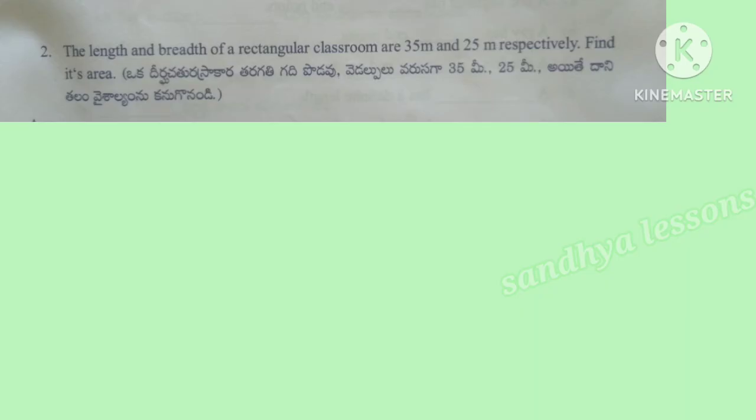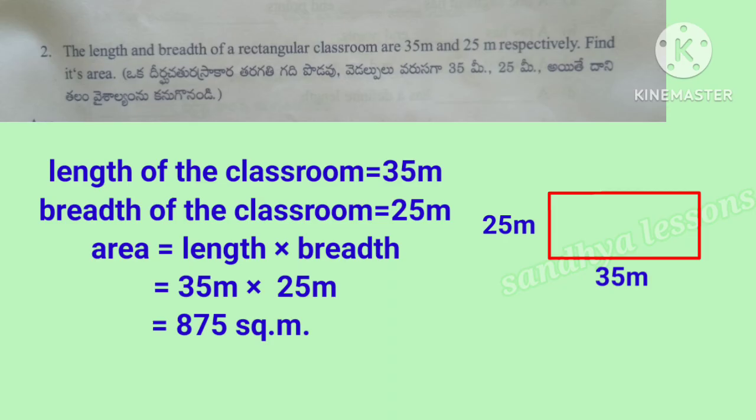Second problem: the length and breadth of a rectangular classroom are 35 meters and 25 meters respectively. Find its area. Length equals 35 meters, breadth equals 25 meters. Area equals length into breadth, that is 35 meters into 25 meters, which equals 875 square meters.